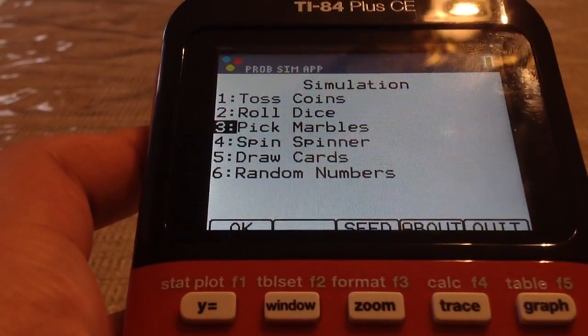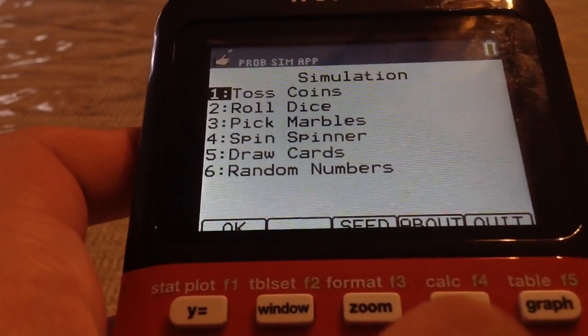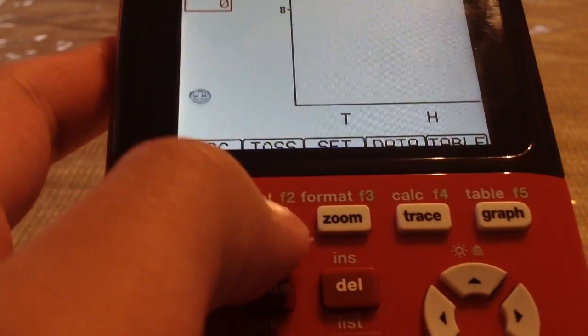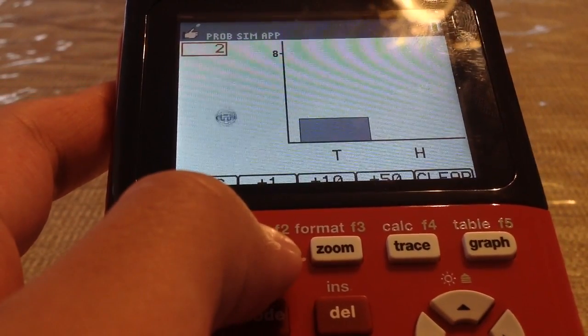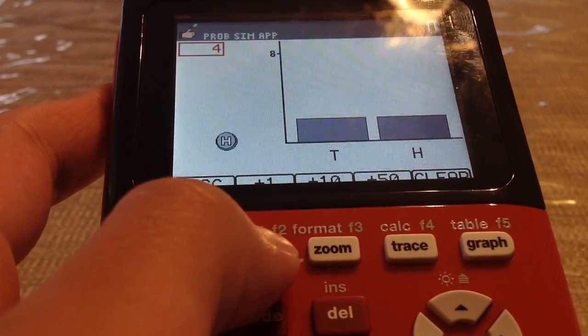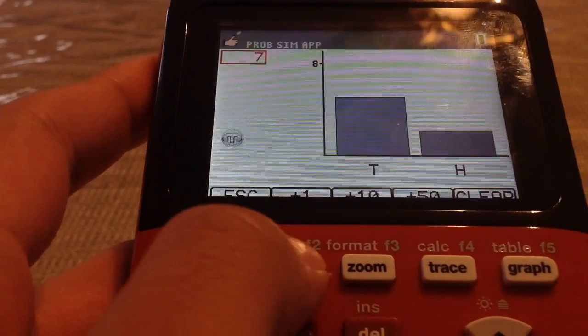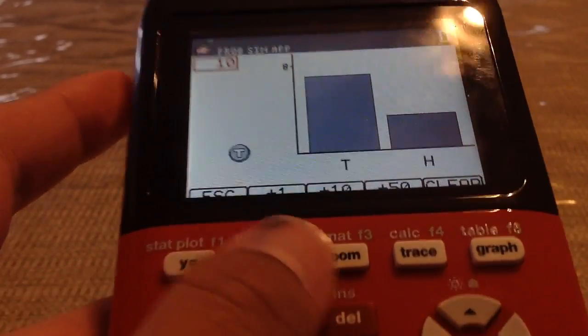Okay, toss coins, roll dice, pick marbles, spin spinner, draw random number. Now let's go to toss coin. Just press that, toss, tails, tails, heads. And this is a completely 50-50, nothing against it, just look, completely real and stuff.